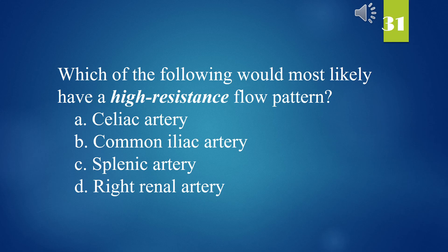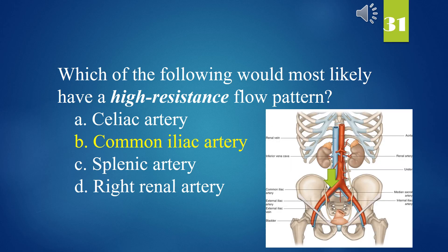Which of the following would most likely have a high resistance flow pattern? A. Celiac artery. B. Common iliac artery. C. Splenic artery. D. Right renal artery. The answer is B. Common iliac artery.